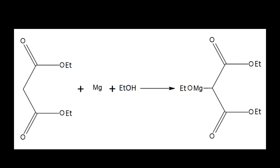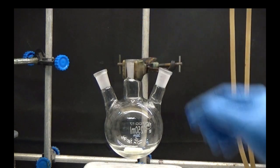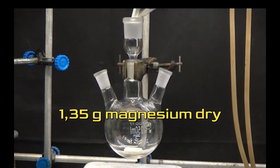Once the benzoyl chloride is obtained, we will prepare the organic compound with diethylmalonate and magnesium. In a 250 milliliter three-necked flask, place 1.35 grams dry magnesium metal.